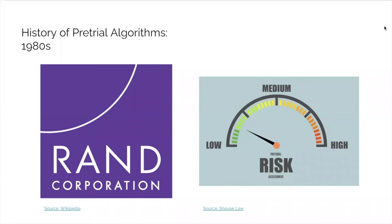In 1982, the Rand Corporation released a report that tried to predict the likelihood that defendants would recidivate by categorizing them into risk levels. Proponents for the tool argued that it was more accurate than trained humans' intuitive methods of predicting risk. However, the tool had a false positive rate of 55% for high-rate offenders, meaning that more than half of supposed high-rate offenders were incorrectly labeled as likely to be at risk for recidivism. Despite its flaws, the Rand tool has influenced several modern-day predictive tools.